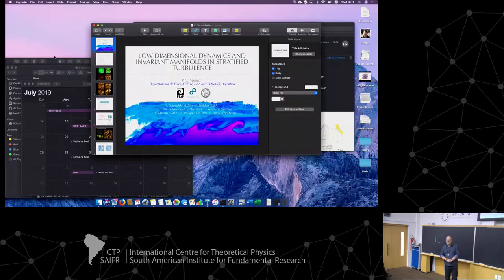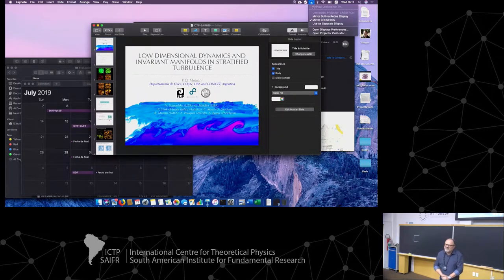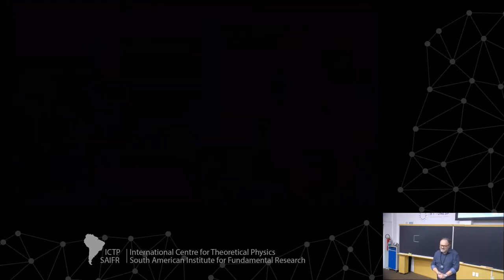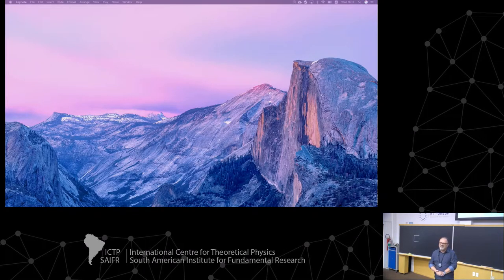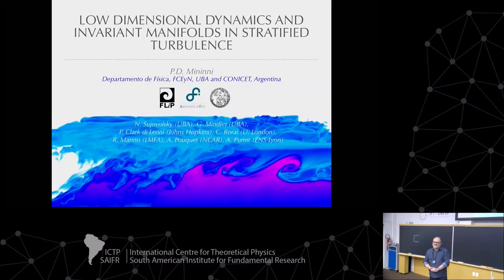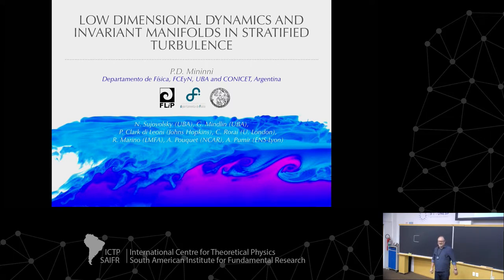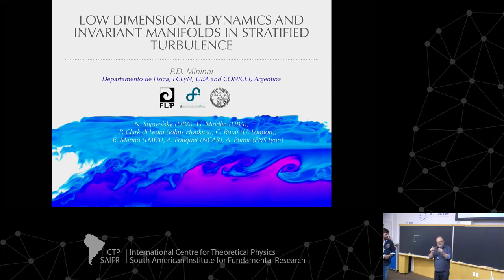One more question: initially when Mackay, Meiss, and Percival described the Cantori, those were the barriers to transport in the standard map. Where do your shearless curves fit into the picture of Cantori? Very good question. You will have the KAM theory valid on both sides of the shearless curve, but strictly speaking it is not valid at the curve itself. That's why some structures you see in twist systems like Cantori are also present in this case — and the scheme of breaking of the shearless curve is very similar to the scheme described by Mackay and Percival. Very interesting work.